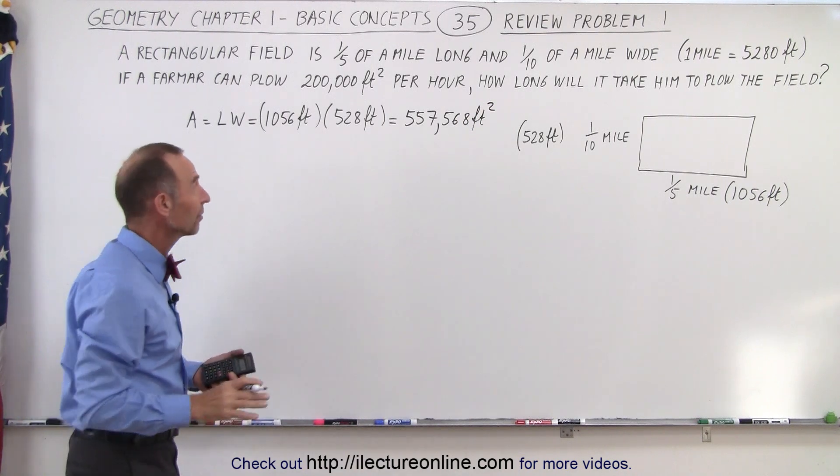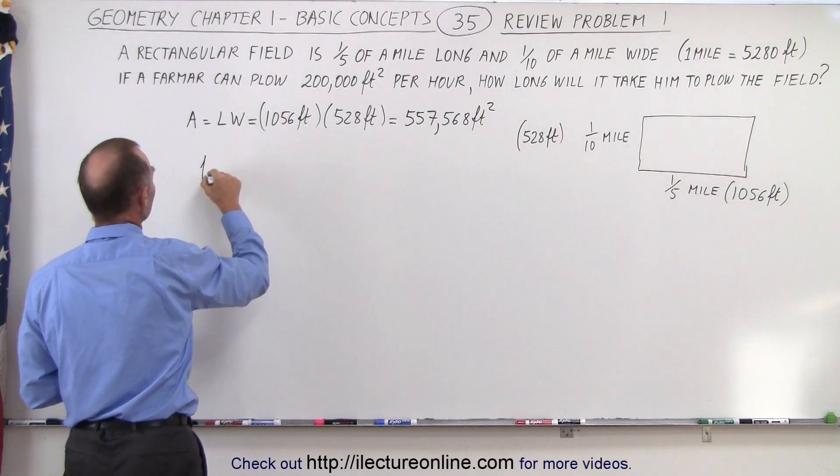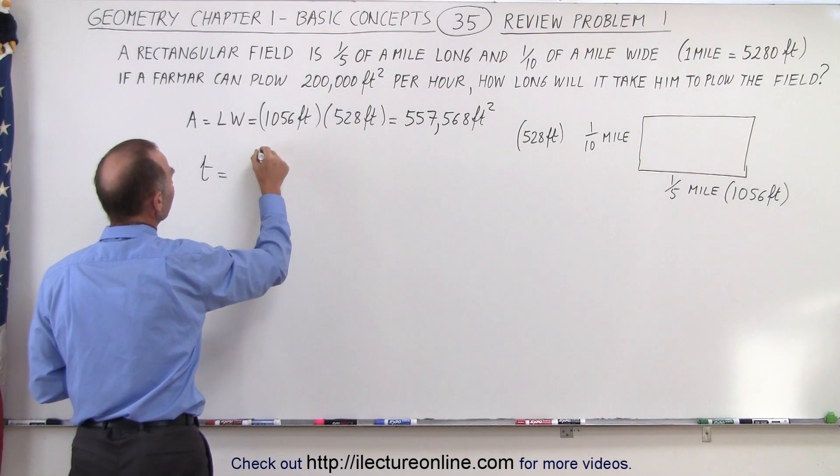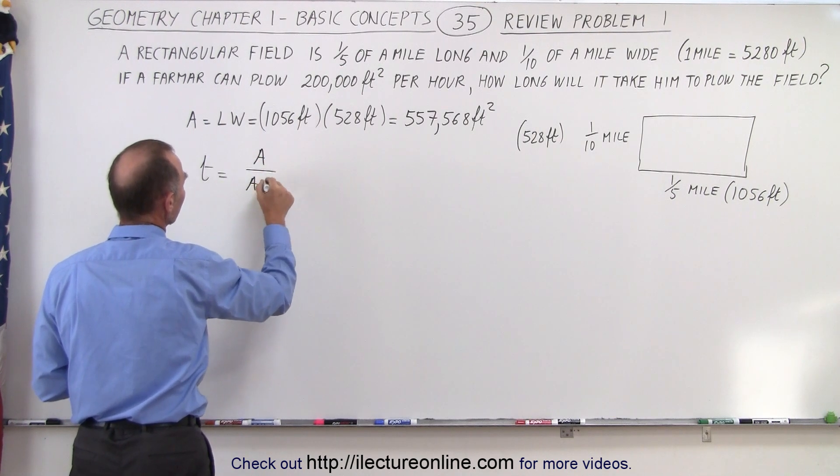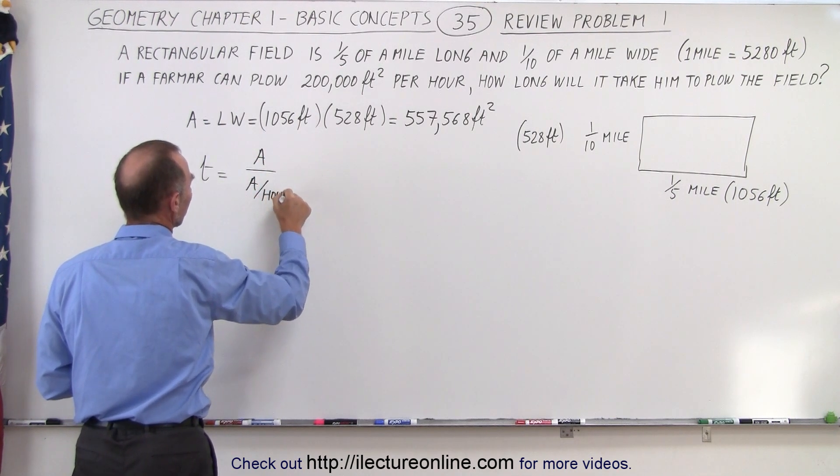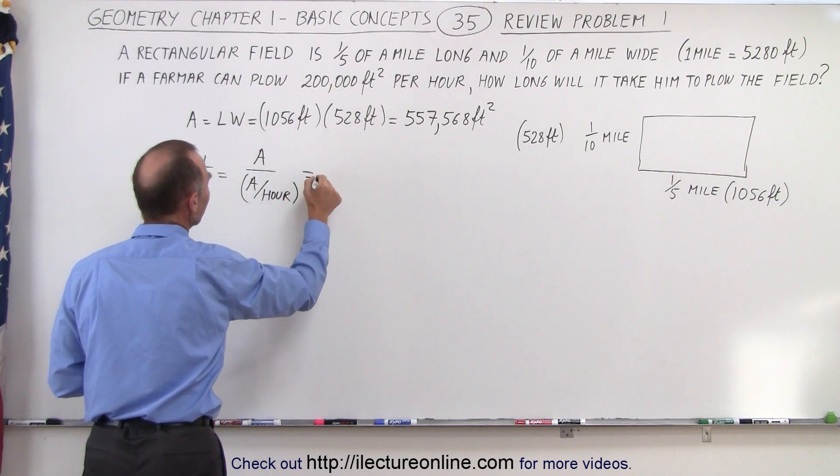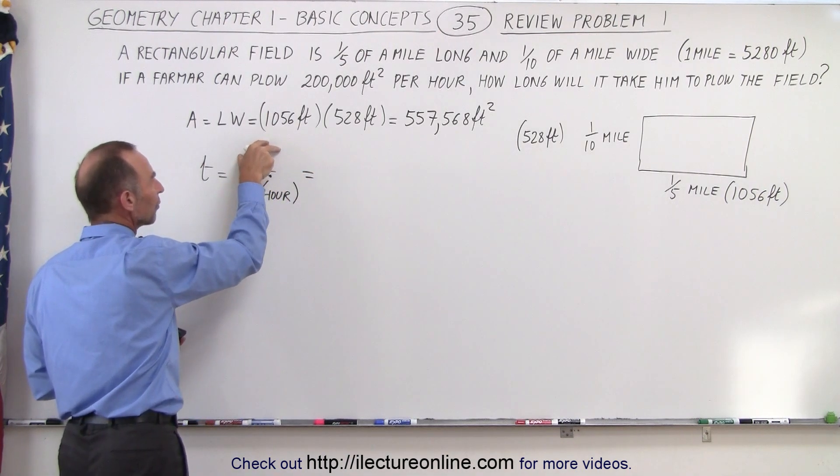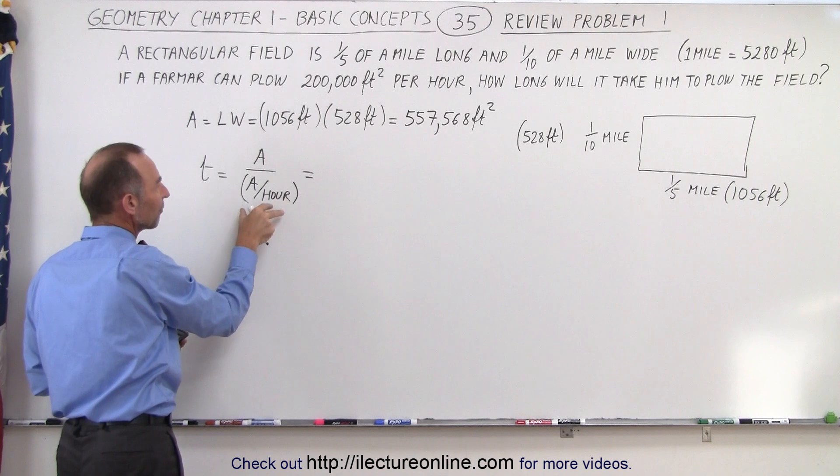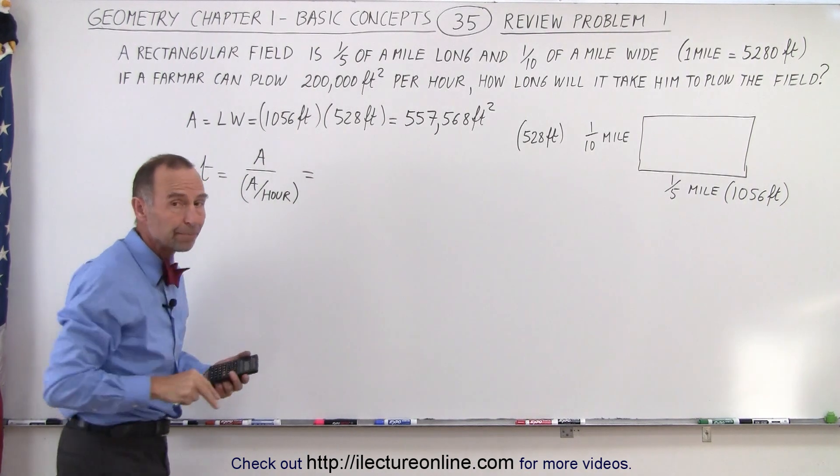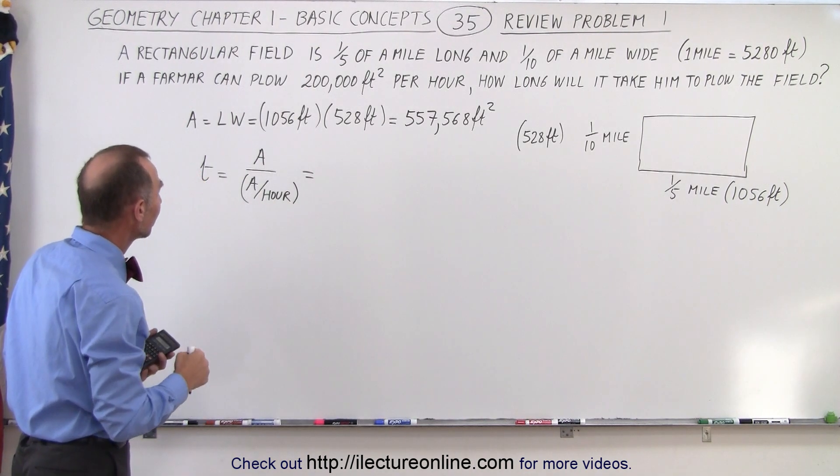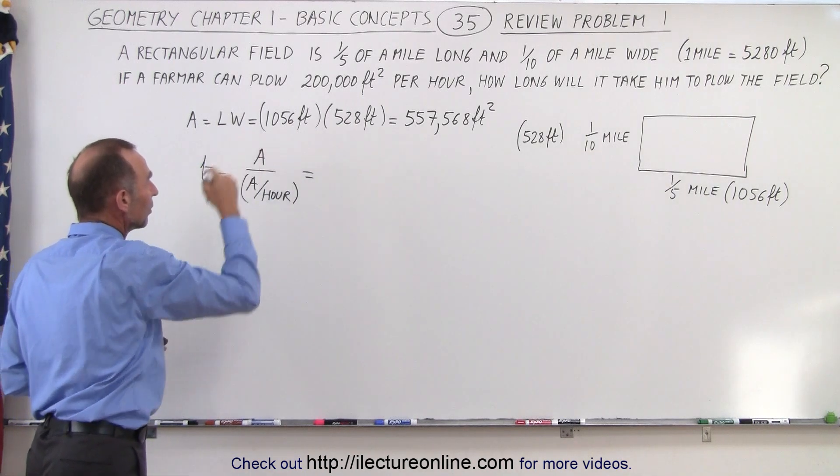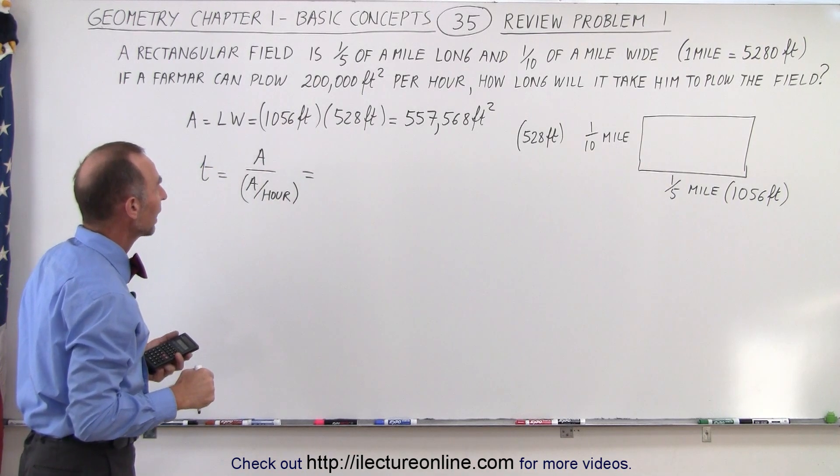So now we can say the time that it takes, the time would be equal to the total area divided by the area per hour. So that's how we find the time. We take the whole area of the field and divide it by the amount of area per hour that the farmer can plow the field. And then the result will be in hours how long it will take him.